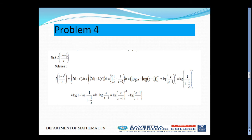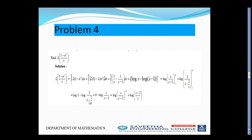Problem 4: Find L of (1−e^t)/t. Since it is division by T, we use the formula: integral from S to infinity of capital F(S) dS. Capital F(S) is L of (1−e^t). Splitting: L of 1 minus L of e^t gives 1/S minus 1/(S−1). Integrating from S to infinity: log S minus log(S−1), evaluated as log(S/(S−1)) with limits S to infinity. Substituting upper and lower limits, we get log((S−1)/S).